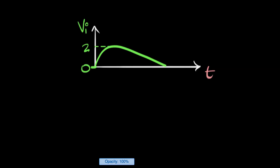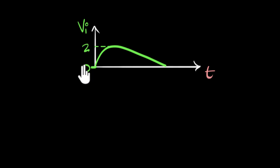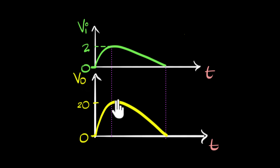Let's take an example. Imagine our input voltage swings from zero to two units — it could be volts, millivolts, whatever — quickly and then slowly dies back to zero. Now suppose we want our output voltage to be 10 times more magnified. We might expect the output to follow the same pattern but swing from zero to 20 — 10 times more magnified — and then go back to zero.